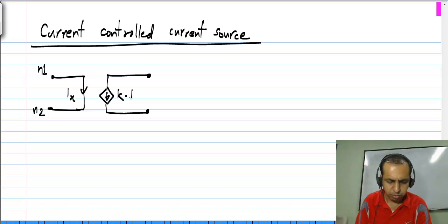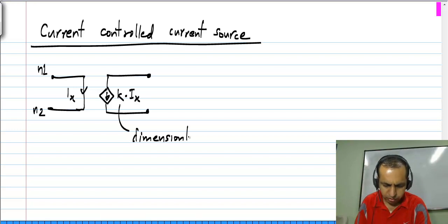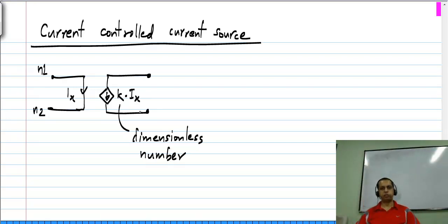This current is given by k times Ix, where k is a dimensionless number because it multiplies a current to give you a current.